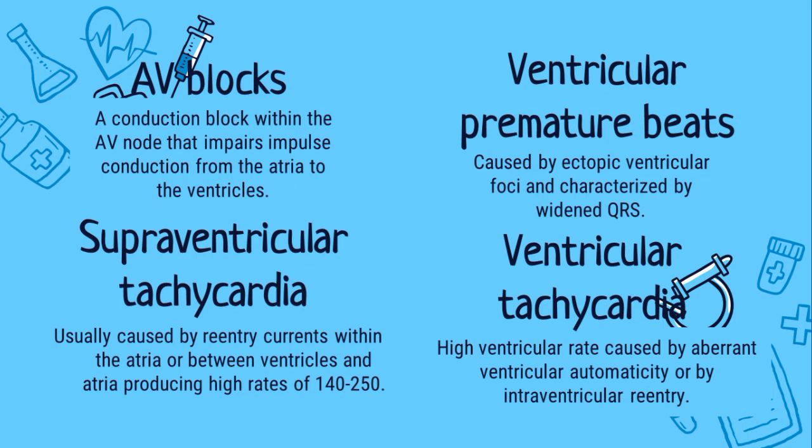Next is the ventricular tachycardia. It occurs when the lower chamber of the heart beats too fast to pump well and the body doesn't receive enough oxygenated blood. Ventricular tachycardia can be life-threatening, caused by aberrant ventricular automaticity or by intraventricular re-entry. It can either be sustained or non-sustained and is characterized by widened QRS with a rate of 100 to 200 beats per minute.